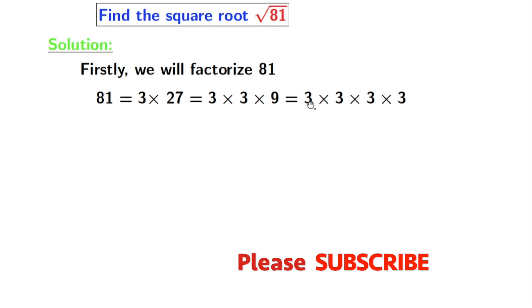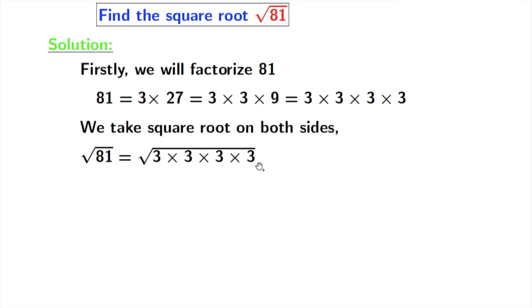Now we will take square root on both sides, and we get square root of 81 is equal to square root of 3 times 3 times 3 times 3.